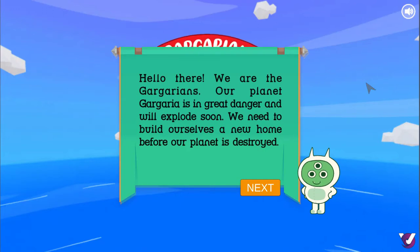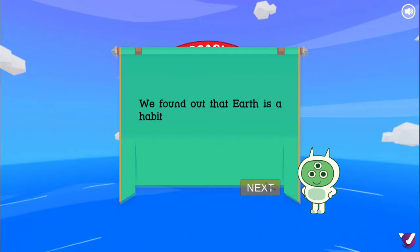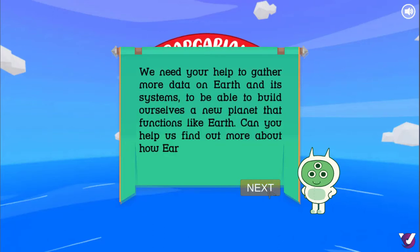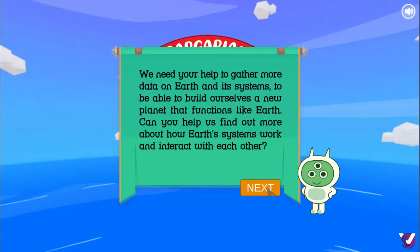Hello there. We are the Gargarians. Our planet Gargaria is in great danger and will explode soon. We need to build ourselves a new home before our planet is destroyed. We found out that Earth is a habitable planet with different systems and is the home of billions of different living things.